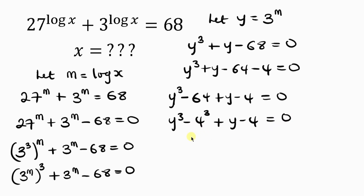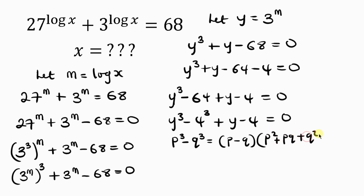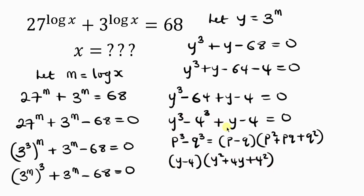You can see that y cubed minus 4 cubed is a difference of two cubes. The difference of two cubes formula is: p cubed minus q cubed equals p minus q, multiplied by p squared plus pq plus q squared. Applying this here gives us y minus 4, times y squared plus 4y plus 4 squared, plus y minus 4, equal to 0.